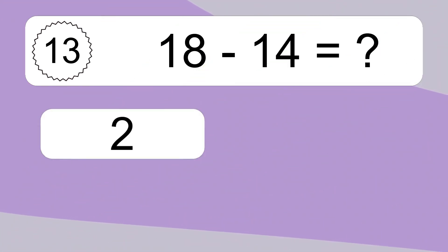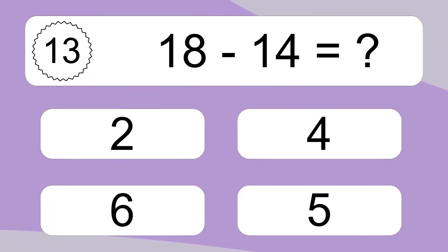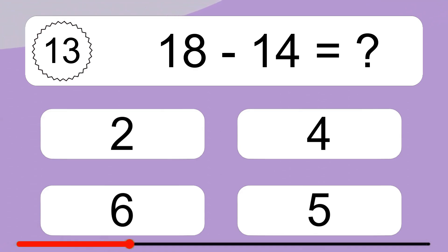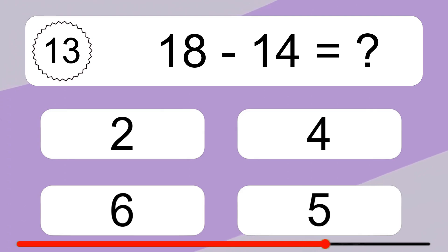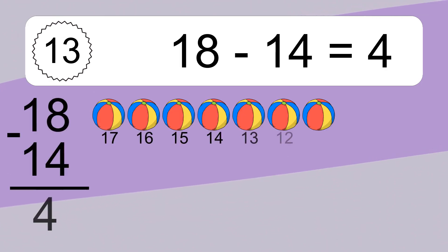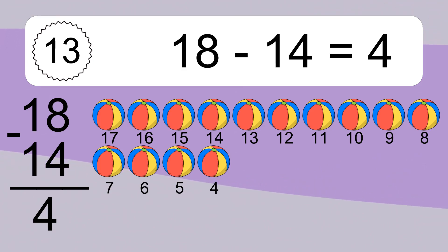18 minus 14 equals what? 18 minus 14 equals 4. Let's count it. 18, 17,